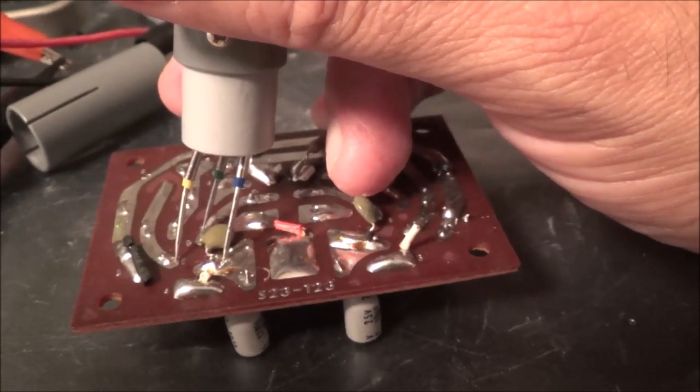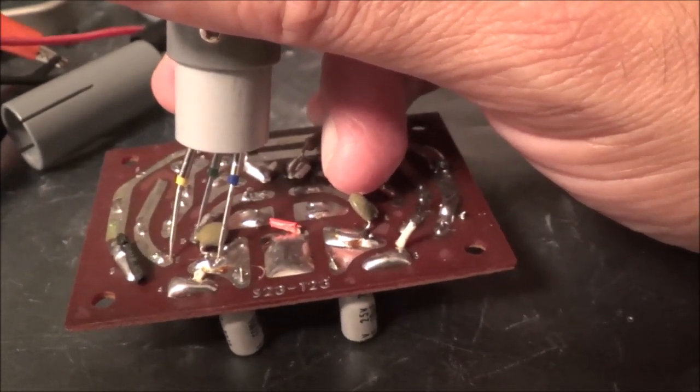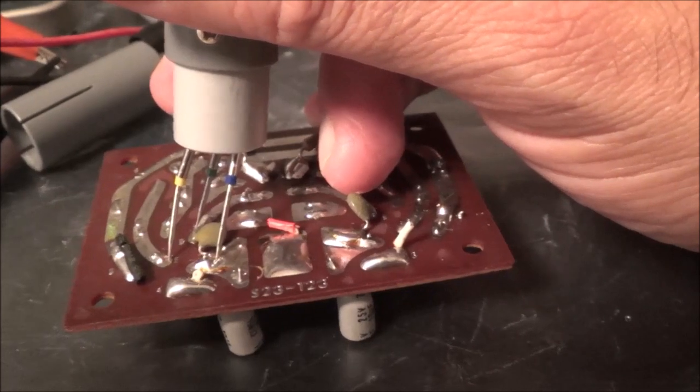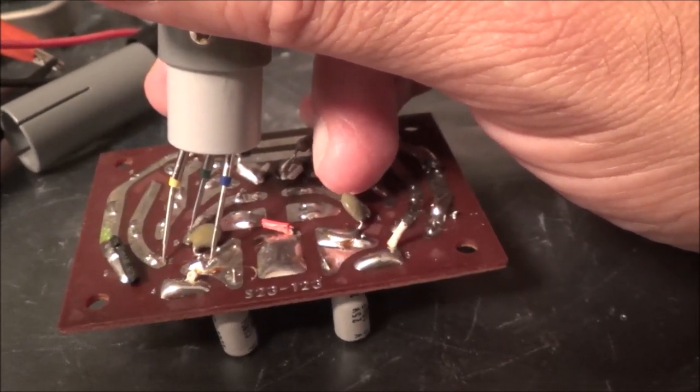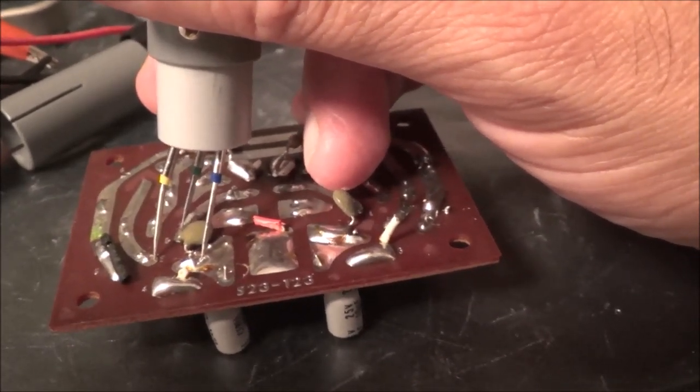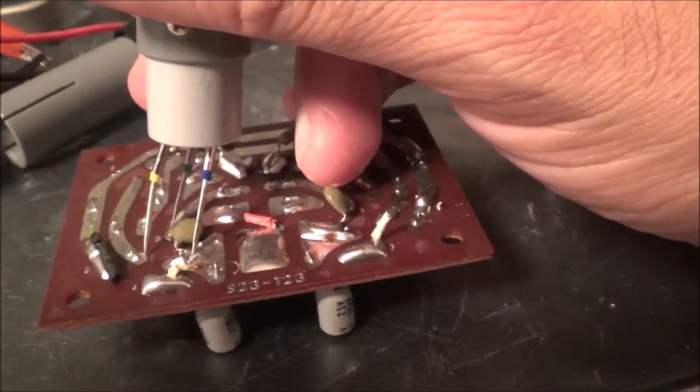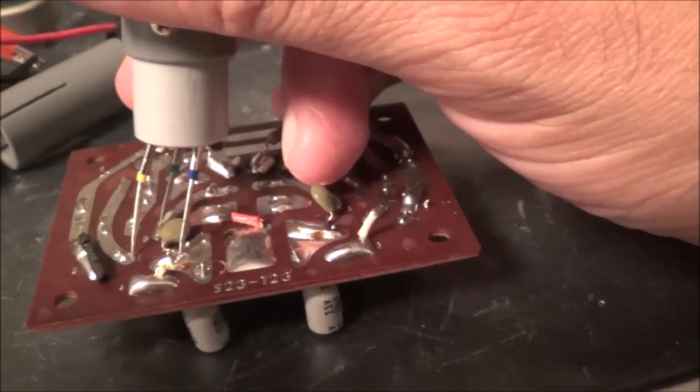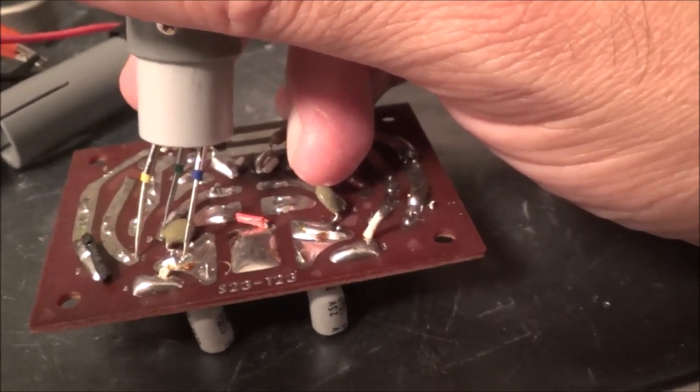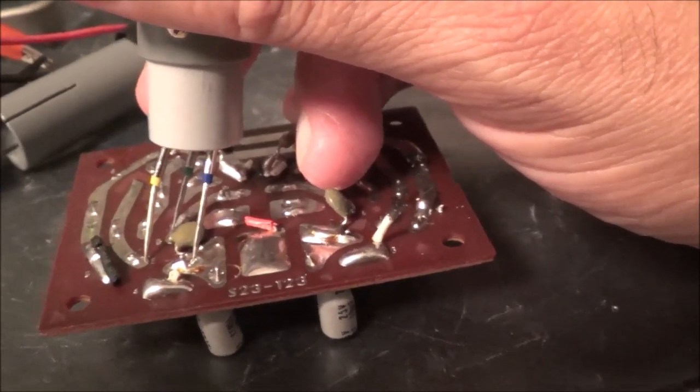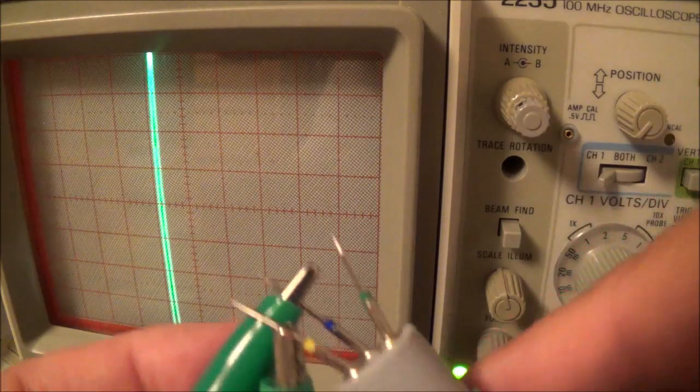I looked up this transistor which was a 2SC I think 458 and then I could tell which pin was the emitter which was the base and which was collector and then I just had to match the colors here. I think the yellow prong is for the emitter the blue one for the collector and the green one for the base.